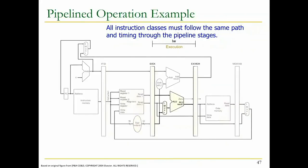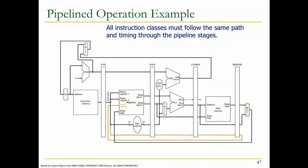You need to use the right data and right control at the right stage. Some instructions don't need all the stages - for example, an ALU operation doesn't really need to access memory, yet it's still going through that memory access stage. That's the cost of pipelining - it needs to go through this memory access stage and waste 200 picoseconds. The alternative is to remove it somehow from the pipeline, which we'll talk about later. There's a performance impact because that instruction could have potentially finished earlier, but then it would break the pipeline.